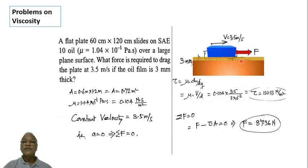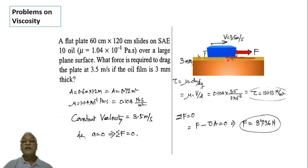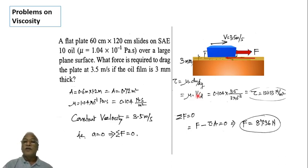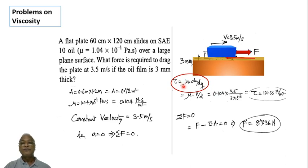Because of viscosity, there will be resistance opposite to the direction of motion. This resistive viscous force fv equals shear stress multiplied by area. Using tau equals mu into du/dy, we calculate tau first. du/dy is velocity divided by thickness of the oil film.